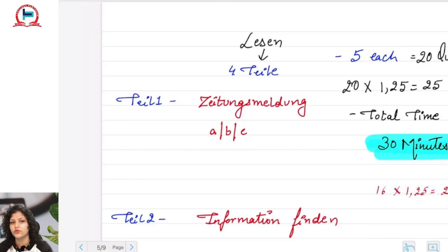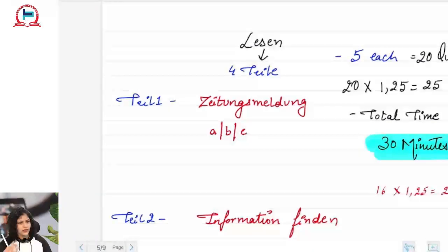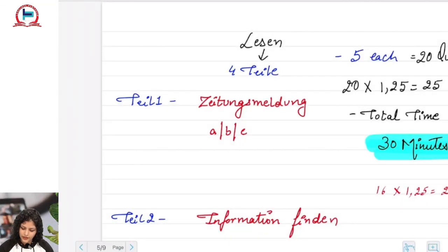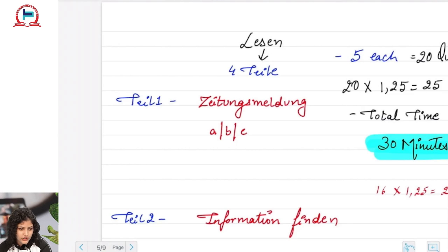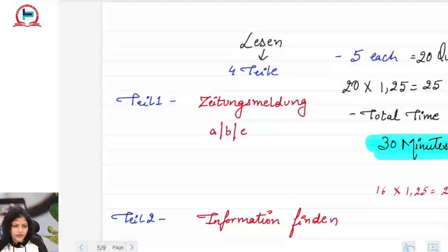Tile eins is a Zeitungsmeldung — you get a single text to read. After reading the text, you answer five questions by marking A, B, or C. The trick is: first read the text, try to understand the context rather than doing word-for-word translation. Once you understand the context, you can mark the correct answers. If unsure, you can search the text again for about two minutes.